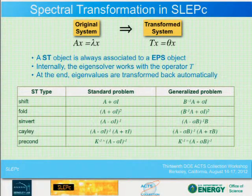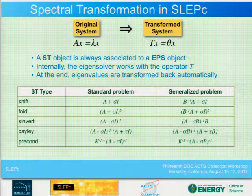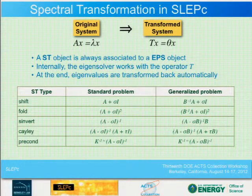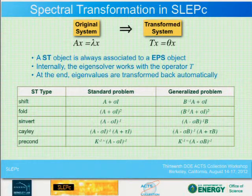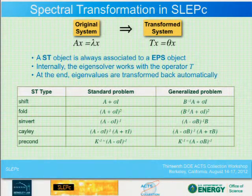To improve convergence, we use spectral transformations via the ST object. The user can set parameters on the ST but cannot access the transformed eigenvalue values directly — you will not be able to recover values of the transformed system. The available spectral transformations are: shift, fold, shift-and-invert, and preconditioned. For the standard problem, you build one form of the transformed matrix; for the generalized problem, a different form.